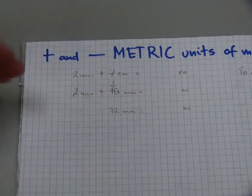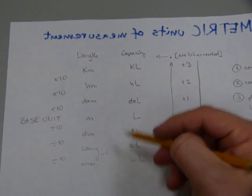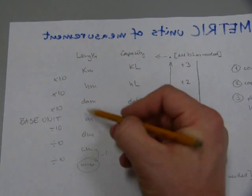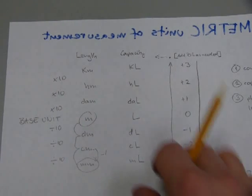Now we need one more conversion from millimeters to meters. Let's go back to the conversion page. Now we're going from millimeters to meters. And that's one, two, three jumps. Three levels. We're going up on the elevator.